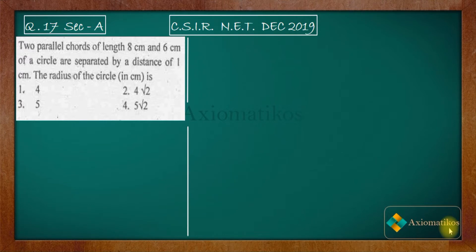Hello dear students, welcome to Axiomatic. This video is part of the solution series for CSIR NET December 2019, and we are doing Problem 17 of your paper — a problem of General Aptitude. Two parallel chords of length 8 centimeter and 6 centimeter of a circle are separated by a distance of 1 centimeter. The radius of the circle in centimeter is — let's solve this.